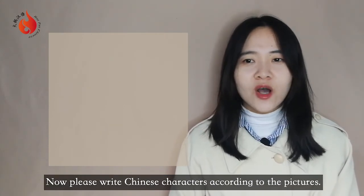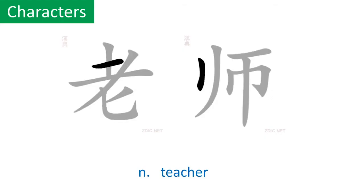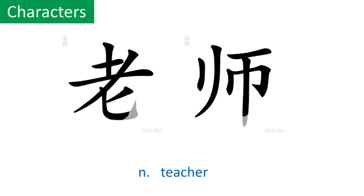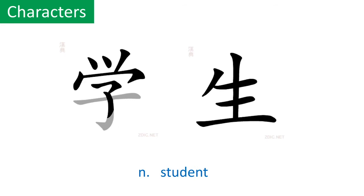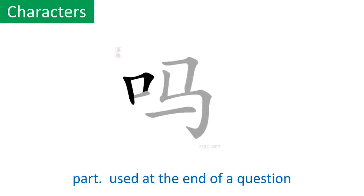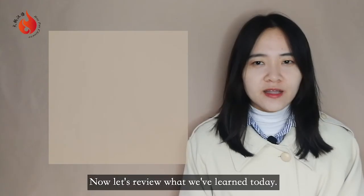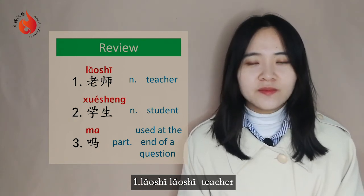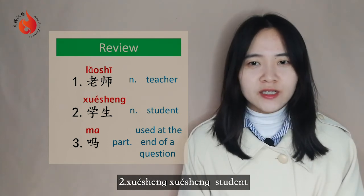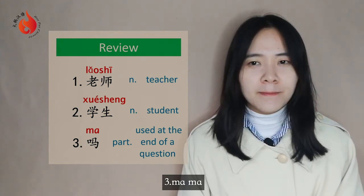Please write Chinese characters according to the pictures: 老师, 学生, 吗. Now let's review what we have learned today. First: 老师 — teacher. Second: 学生 — student. Third: 吗.